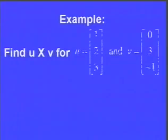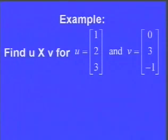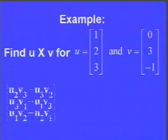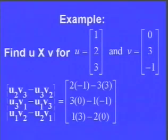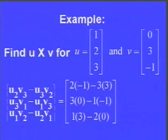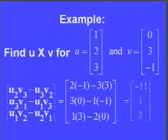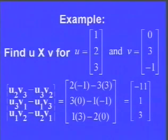Let's find u cross v for u = (1, 2, 3) and v = (0, 3, −1). Using the memorized formula: first entry is 2·(−1) − 3·3; second entry is 3·0 − 1·(−1); third entry is 1·3 − 2·0. That gives the answer (−11, 1, 3), a three-dimensional vector. It wasn't that bad — we just memorized the formula, plugged in the numbers, and worked it out.